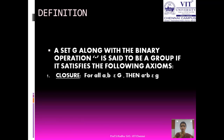Number 1: Closure. That is, for all a, b belonging to G, you should have a star b belonging to G. That is, if you consider two elements of G and when operated by a binary operation star, then the resultant should also belong to the same group G.